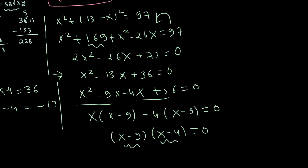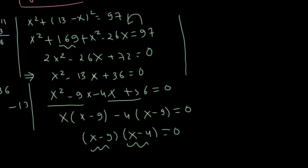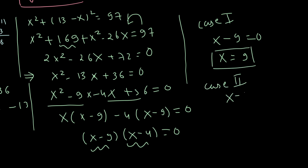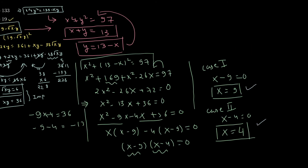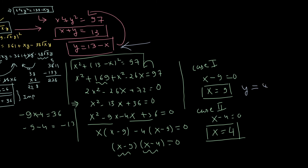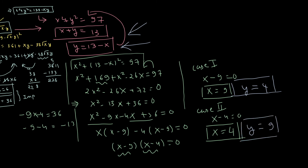Since the product equals zero, either x − 9 = 0 giving x = 9, or x − 4 = 0 giving x = 4. Using y = 13 − x: when x = 9, y = 4; when x = 4, y = 9. So the final solution pairs are (x, y) = (9, 4) and (x, y) = (4, 9).